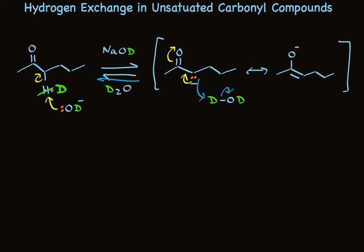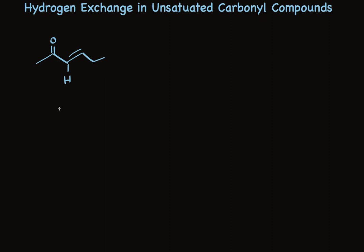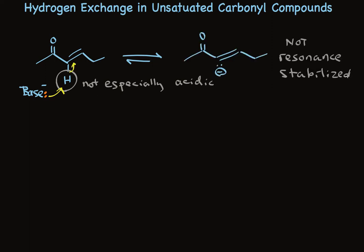Now let's look at the alpha-beta unsaturated ketone. This alpha-hydrogen is not removed directly because it's not especially acidic. Base removal of this proton does not form a resonance-stabilized anion. The orbital that contains this pair of electrons cannot overlap with the pi-system here of the carbonyl, because this pi-system of the carbon-carbon double bond is overlapping with it. So under the conditions that we're talking about, this equilibrium does not happen.